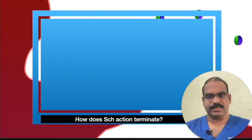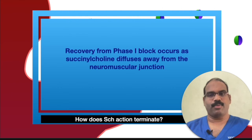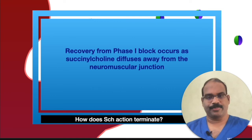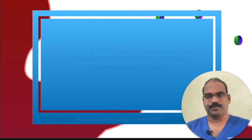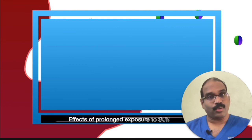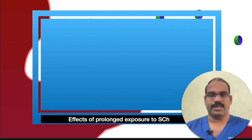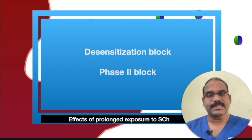How does succinylcholine action terminate? Recovery from phase one block occurs as succinylcholine diffuses away from the neuromuscular junction down a concentration gradient. As the plasma concentration decreases, it is metabolized by plasma cholinesterase, previously called pseudocholinesterase. What are the effects of prolonged exposure to succinylcholine? It may be desensitization block or phase two block.